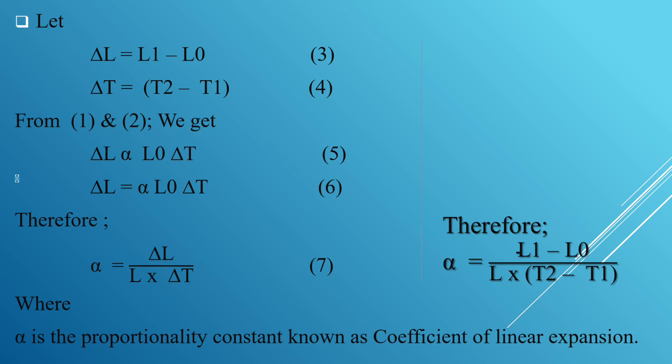Removing the proportionality sign, we get delta L equals alpha times L0 times delta T, where alpha is the proportionality constant called the coefficient of linear expansion. Writing the equation in terms of alpha, we get alpha equals delta L divided by L0 times delta T.